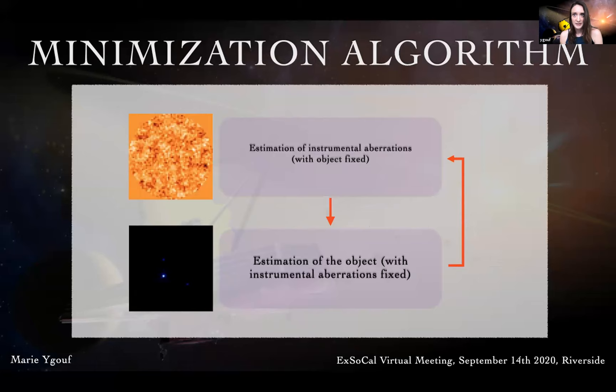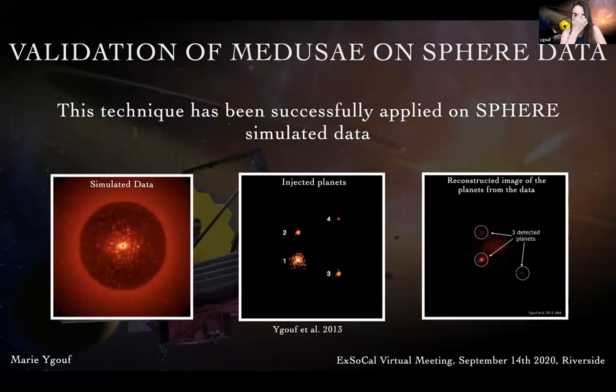This technique was successfully applied on SPHERE simulated data shown on the left panel here. In the middle you can see the planets that have been injected into those data, and on the right panel the reconstructed image with three detected planets out of the four that were injected, by implementing this technique on those simulated data.